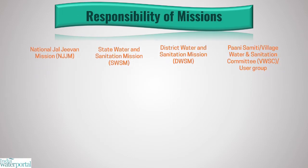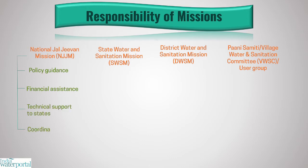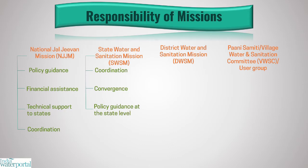The roles of the various missions are as follows. The National Jal Jeevan Mission will provide policy guidance, financial assistance, and technical support to states, and coordinate with other ministries and departments for convergence. The State Water and Sanitation Mission would be responsible for coordination, convergence, and policy guidance at the state level.